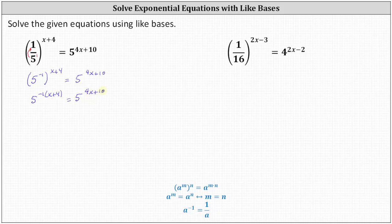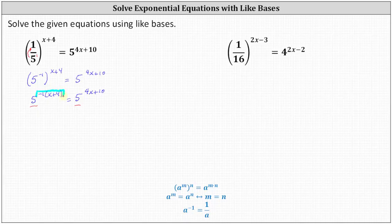Notice now we have both sides of the equation written with base five. Because the expressions are equal, the exponents must be equal, which means negative one times the quantity x plus four must equal four x plus ten.